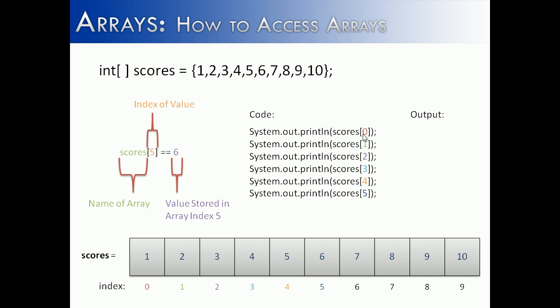So if we tried to look at 0, index 0, we would find a 1. If we tried to look at index 1, we would find a 2. Index 2, we would find a 3, 4, 5, and 6.